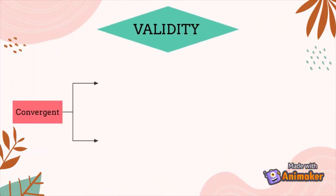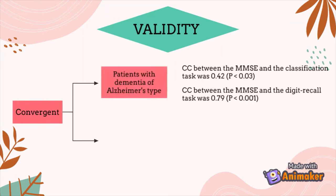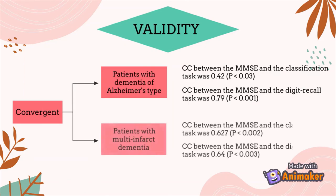Next is validity. For convergent validity, in patients with dementia of Alzheimer's type, the correlation coefficient between the MMSE and the classification task was 0.42, and the digit recall task was 0.79. In patients with multi-infarct dementia, the correlation coefficient between the MMSE and the classification task was 0.627, and the digit recall task was 0.64.